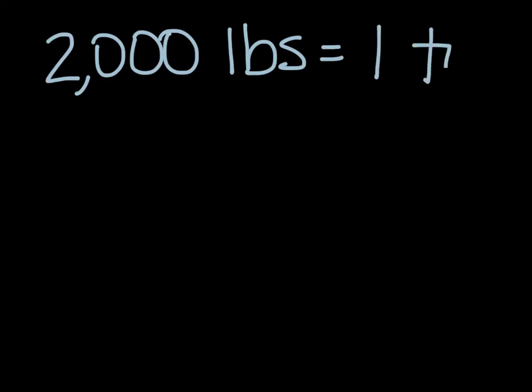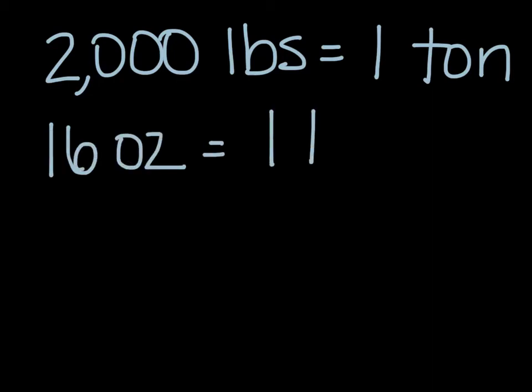There are 2,000 pounds, that's how we write pounds, in one ton. And there are 16 ounces in one pound.